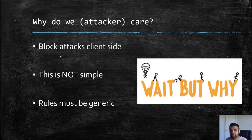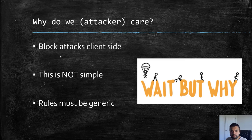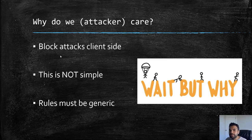You might wonder: why do we care about this as an attacker or pen tester? The reason is, unless you understand how these mechanisms work, you're not really going to be able to bypass them. When you're doing black-box testing the probability of success is very low, but in a gray-box or white-box pen test where you have access to the source code and client-side filters, it becomes much easier to bypass them.